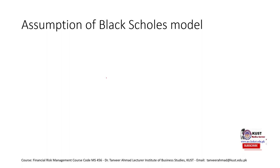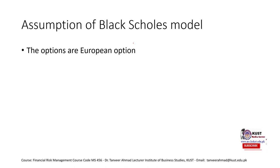Moving on to our next topic: the assumptions of the Black-Scholes model. Before listing them, whenever we discuss models we discuss them under idealistic conditions. For example, the law of demand states that as price increases, quantity demanded decreases, keeping other things constant — the assumption being that other things remain constant. Obviously in normal conditions that won't happen, but we take the idealistic condition to develop the theory, and afterwards we relax those conditions to see whether the model still holds.